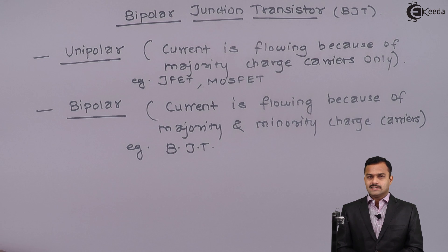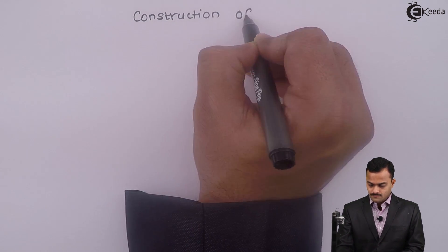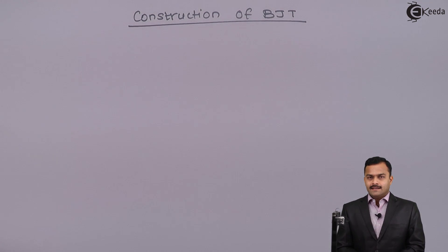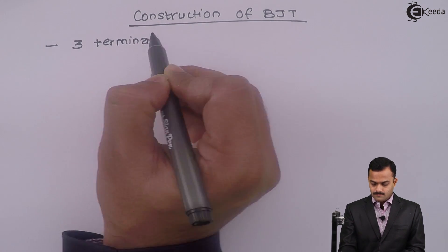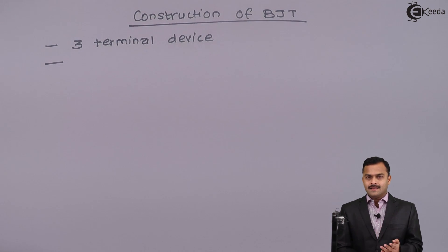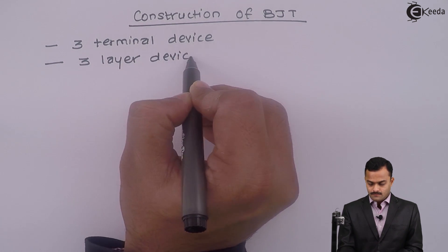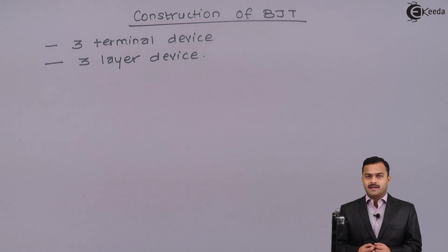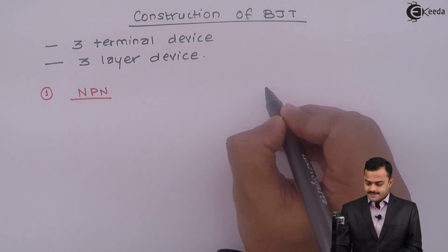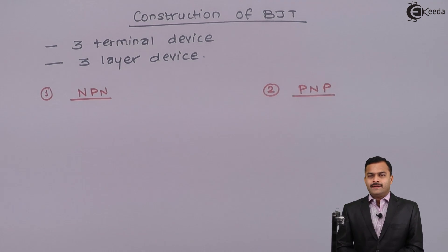Let's discuss construction of BJT. BJT is a three terminal device, it is a three layer device. We have p-type and n-type semiconductors. Based upon which layer you are putting between other two layers, there are two types of configurations: NPN and PNP.